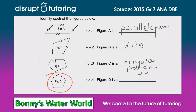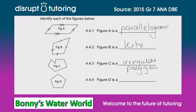Moving on to figure D. We can see it's a shape that has five sides, but we're not clear on whether these sides are equal or not because they haven't been indicated with a little marker. A shape that has five sides is called a pentagon, but more specifically this pentagon is irregular because they haven't told us the sides are the same size. So this is an irregular pentagon.